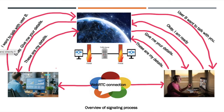This is a sample illustration of the signaling process. Suppose two users want to connect to each other for a call. First, user A sends a request to the signaling server. Then the signaling server sends a response back to user A requesting user A's metadata. Once the server gets the metadata, the server sends a request to user B saying that user A wants to communicate with you. Now user B sends a response back that they are ready for communication. Then the server responds back to user B: I need your metadata. After getting metadata from user B, the server exchanges metadata between user A and user B. That's it — signaling is done. After that, direct communication between users is done through RTC peer connection of WebRTC.